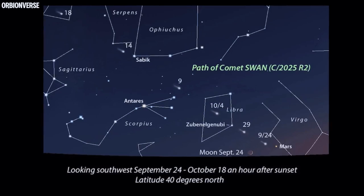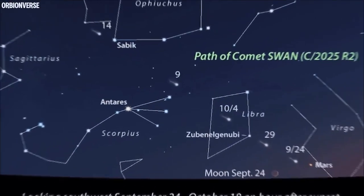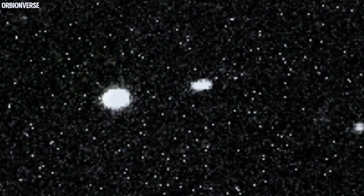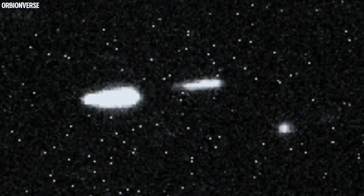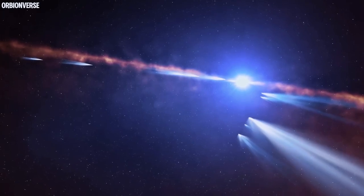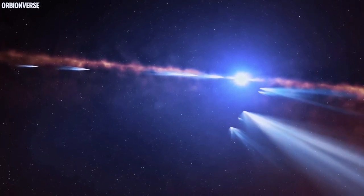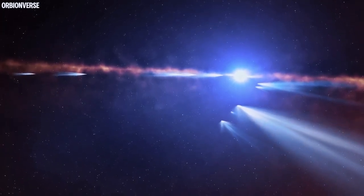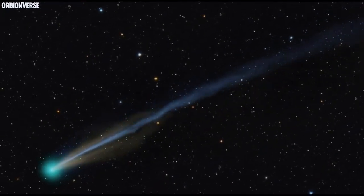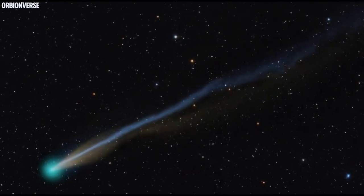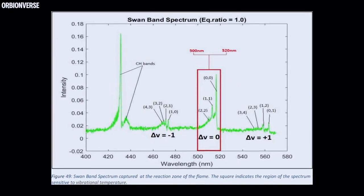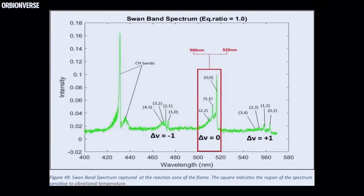But then came the strange coincidences. Both comets, from entirely different origins, were moving in perfect synchronization, mirroring each other's approach as if responding to a single invisible command. Their tails both showed a faint green glow—not uncommon in comets, but this green was different. It pulsed. Astronomers ran spectral analyses, and what they found shocked them: both Swan and Lemon emitted the same rare chemical signature, a compound never before detected in comets so far from the sun.